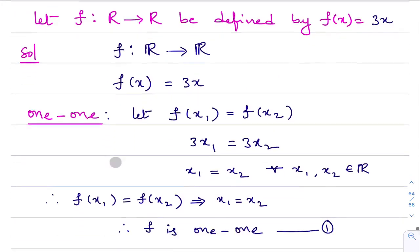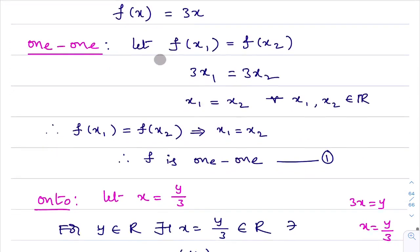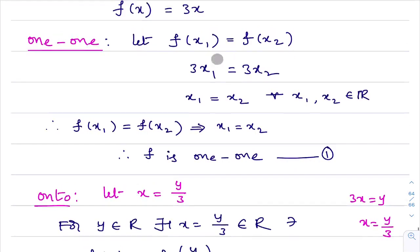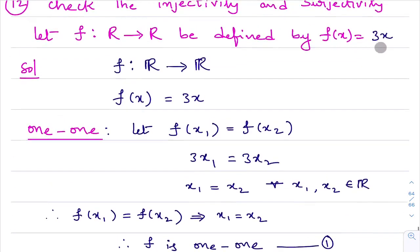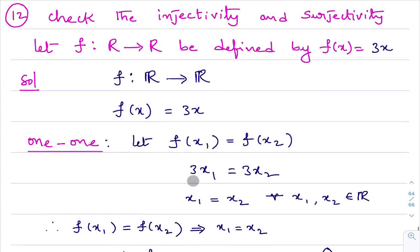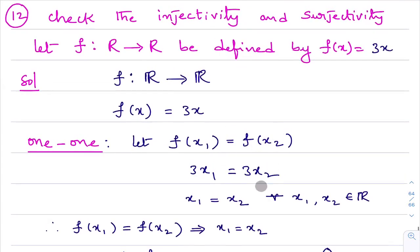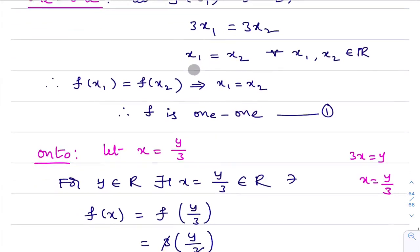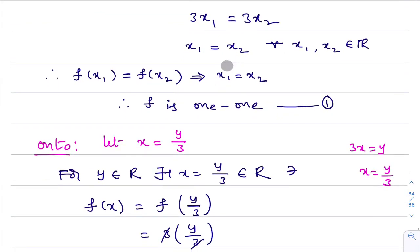Let me verify. For one-one: take f(x1) = f(x2), which gives 3x1 = 3x2. The 3's cancel and we get x1 = x2. Therefore f(x1) = f(x2) implies x1 = x2, so f is a one-one function.